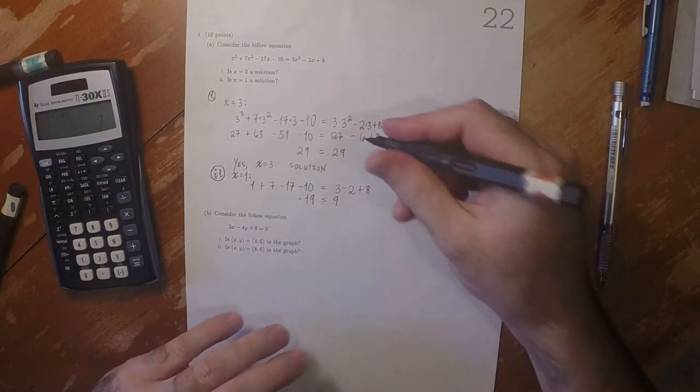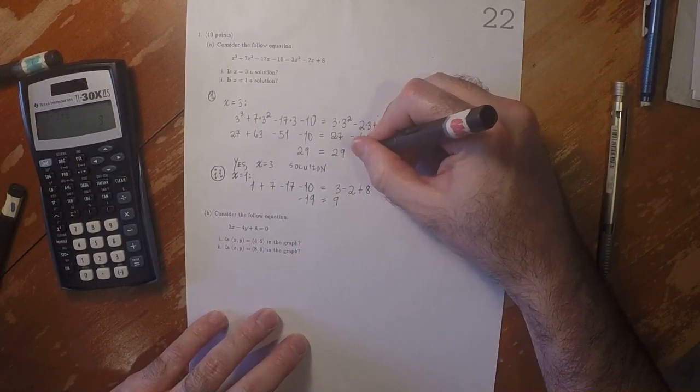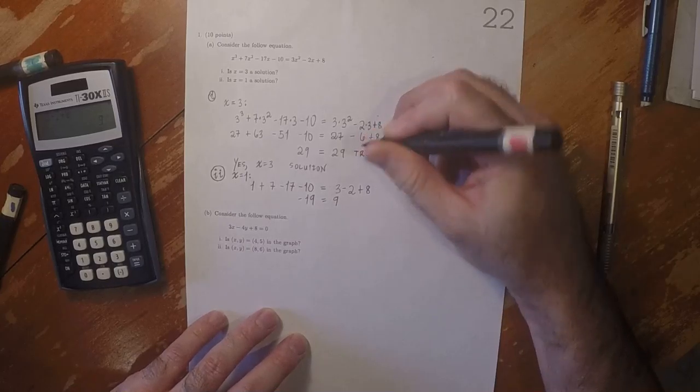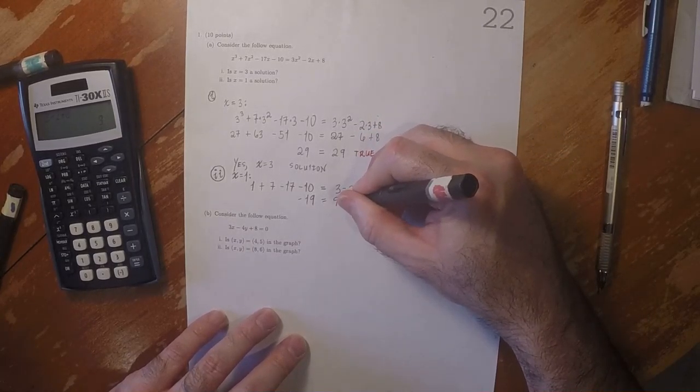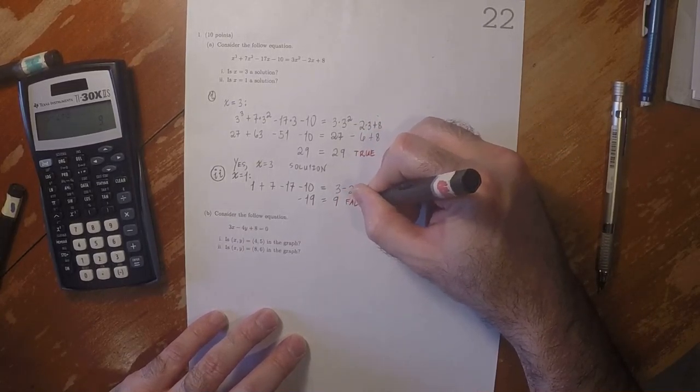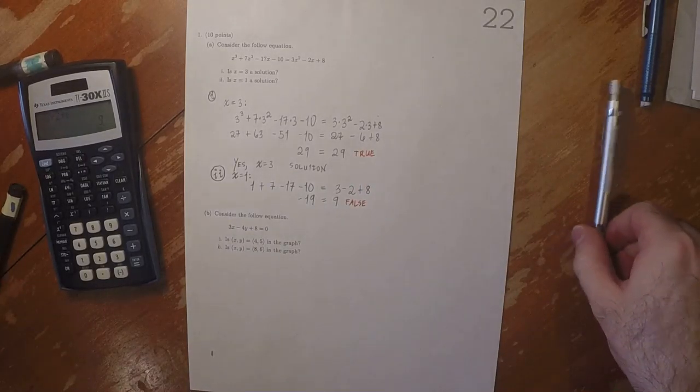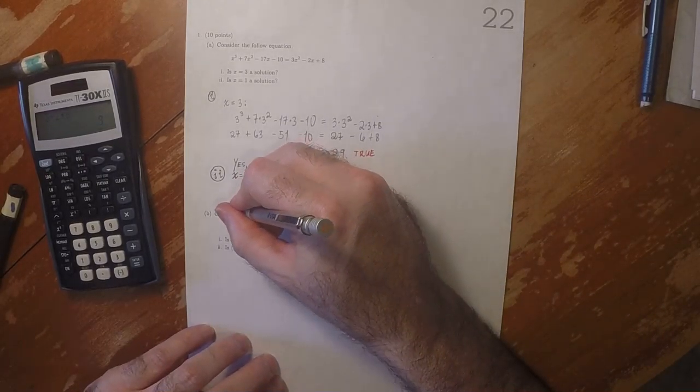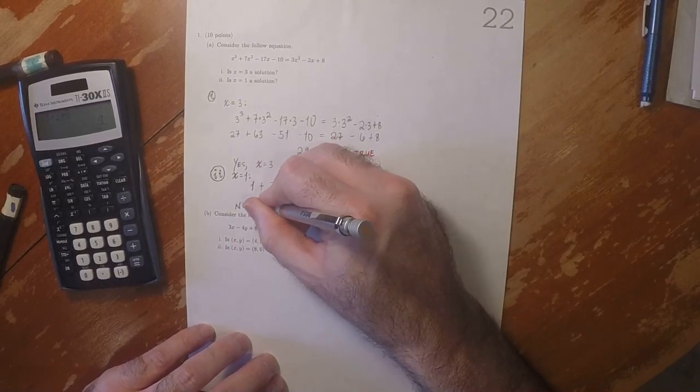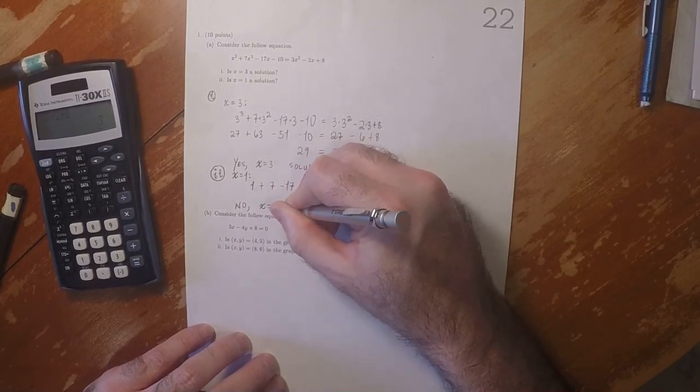So in part i, this equation was true, logically true. Whereas in part ii, this equation is logically false. So the answer is no. x equal to 1 is not a solution.